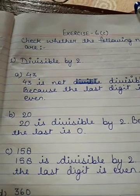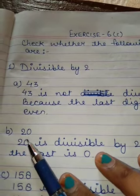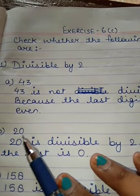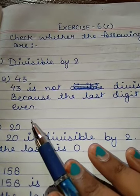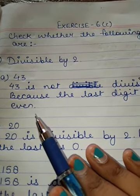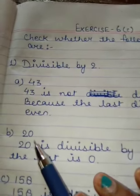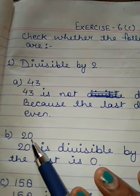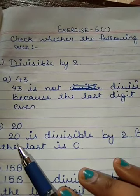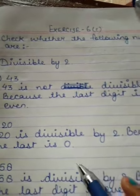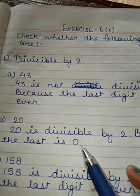Question number B: 20 is given. The last digit is 0. According to the rule, if the last digit is 0, 2, 4, or 6, the number is divisible by 2. So, 20 is divisible by 2 because the last digit is 0.